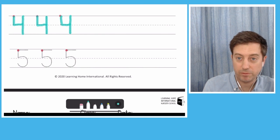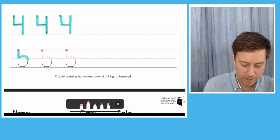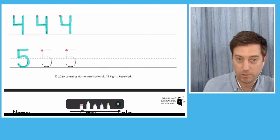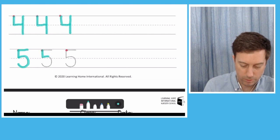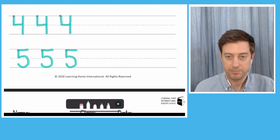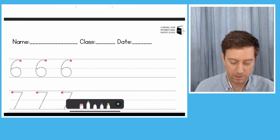Number five, so you're going to start and go down, around, and then across. Down, around, across. Down, around, across. Okay, alright, let's keep going.